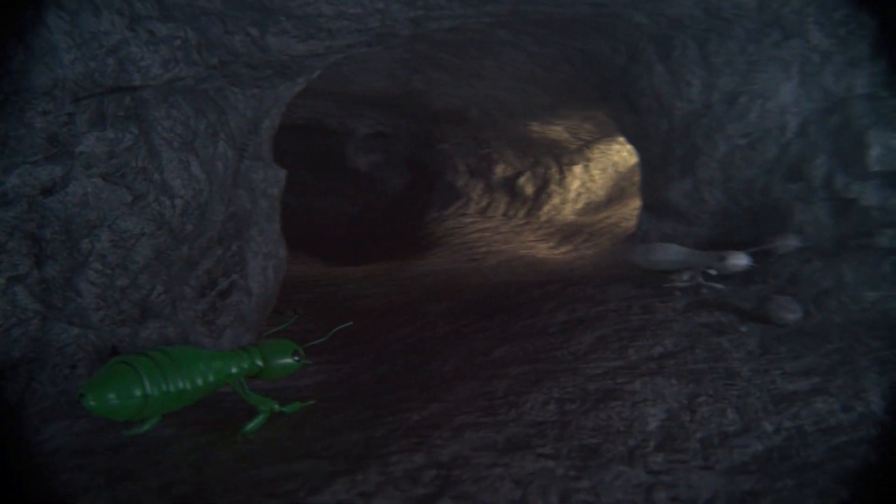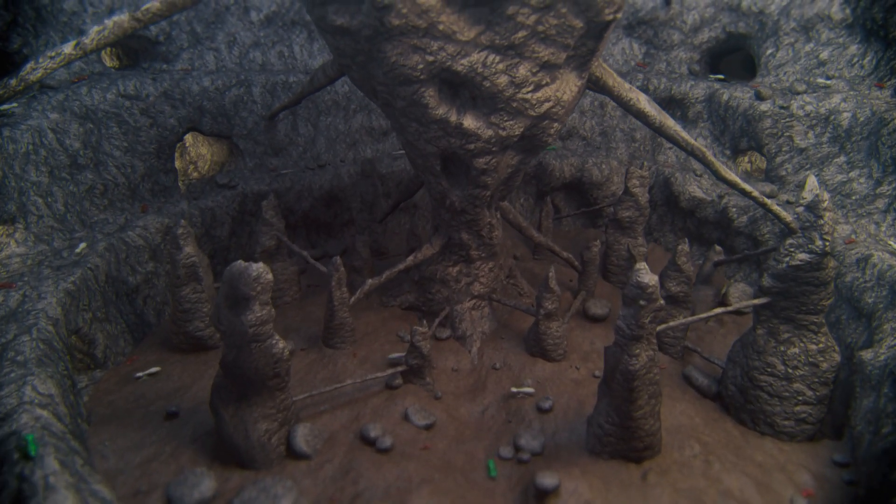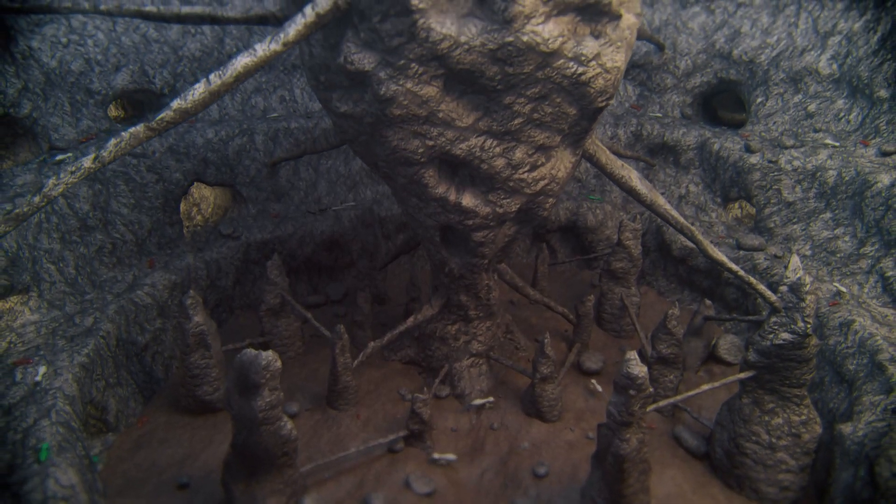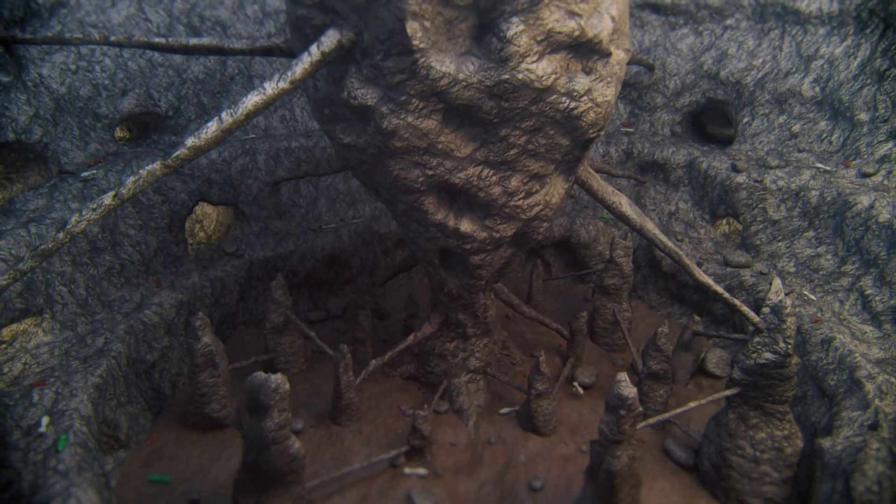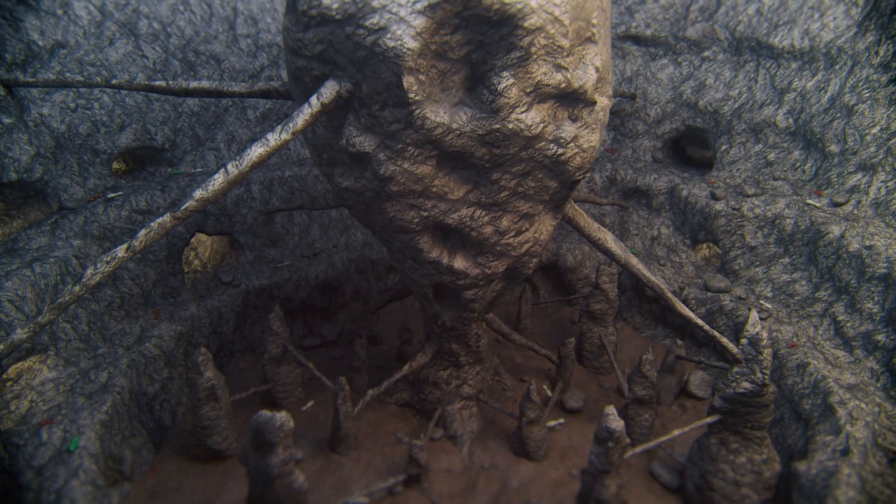What makes termites such a threat is that the colony is hidden underground and behind walls. However, the colony's main weakness is that it's utterly dependent upon these foraging workers for the food that they need to survive. This makes the Centricon system a powerful weapon in the war on termites.